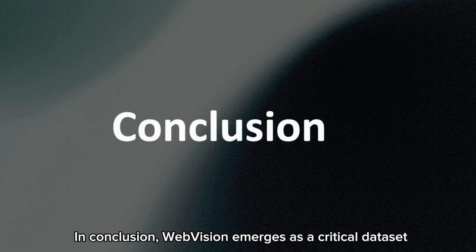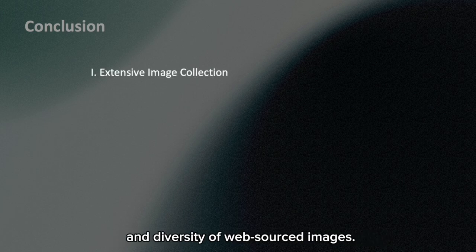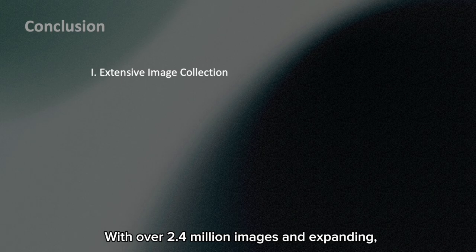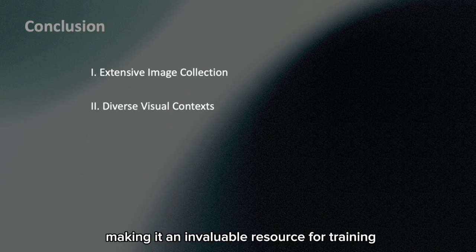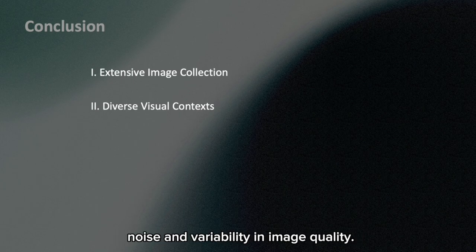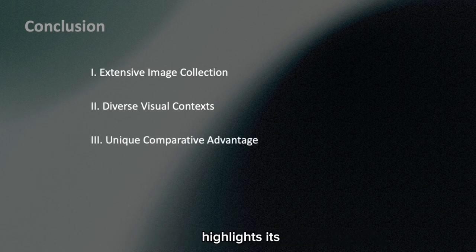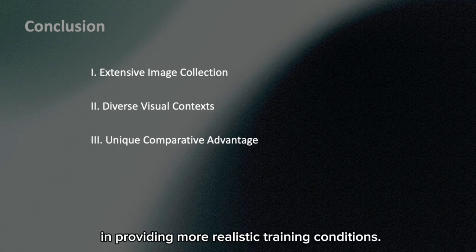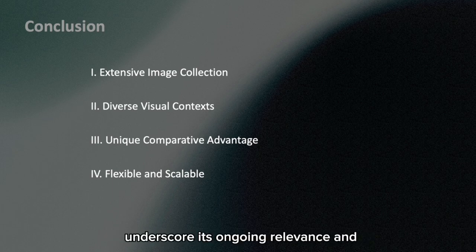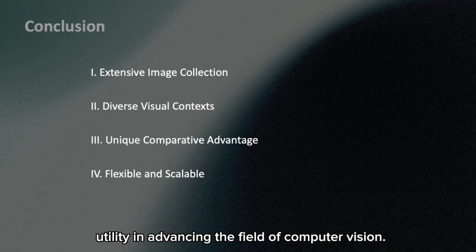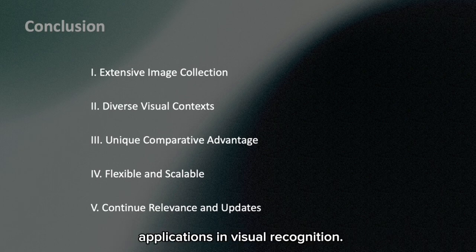In conclusion, WebVision emerges as a critical dataset for the development of visual recognition models due to its extensive collection and diversity of web-sourced images. With over 2.4 million images and expanding, WebVision offers a broad spectrum of visual contexts that reflect real-world scenarios, making it an invaluable resource for training robust models capable of handling label noise and variability in image quality. Its comparison with traditional, meticulously annotated datasets like ImageNet highlights its unique value in providing more realistic training conditions. Moreover, the dataset's flexibility and scalability, evidenced by the release of WebVision 2.0, underscore its ongoing relevance and utility in advancing the field of computer vision. Researchers and practitioners can access and leverage this dataset to enhance their models, contributing to more effective and versatile applications in visual recognition.